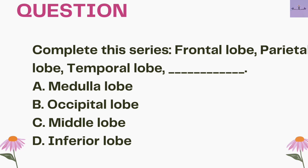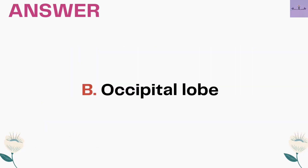Next question: complete the series — frontal lobe, parietal lobe, temporal lobe, and dash. A. Medulla lobe. B. Occipital lobe. C. Medulla lobe. D. Inferior lobe. The answer is option B, occipital lobe. The four lobes of the brain are: frontal, parietal, temporal, and occipital.